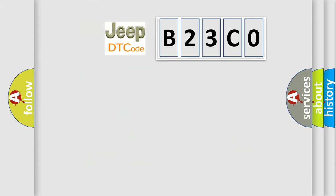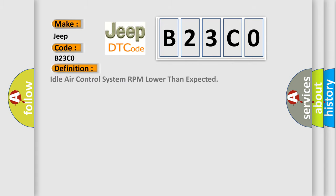So, what does the diagnostic trouble code B23C0 interpret specifically for Jeep car manufacturers? The basic definition is: Idle air control system RPM lower than expected.